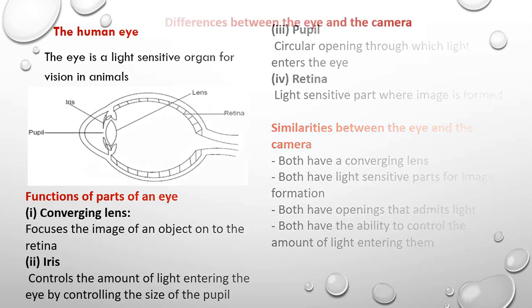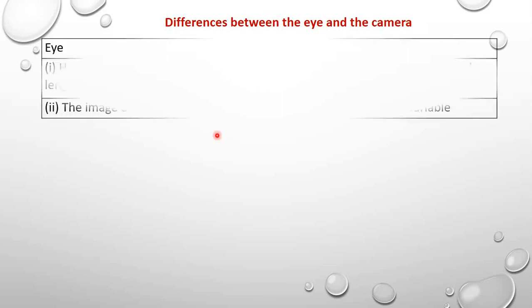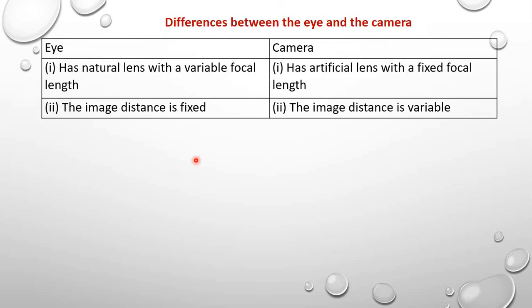Let's also look at the differences. You need to draw a table. On one side you have the eye, on the other side you have the camera. The eye has a natural lens with a variable focal length, while the camera has an artificial lens with a fixed focal length. When we talk of variable focal length, it means the focal length of the eye lens can always be changed just by contraction and relaxation of the ciliary muscles.